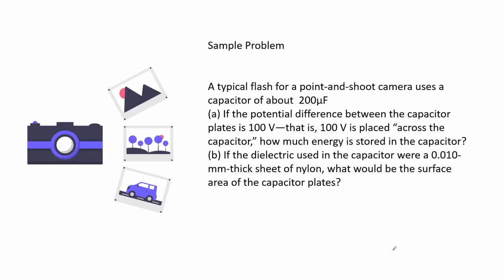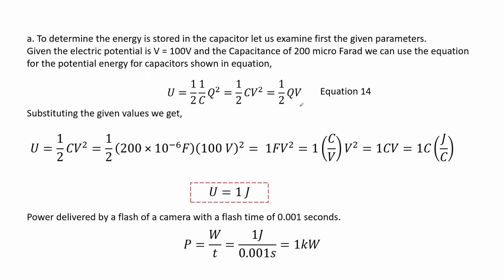Sample problem: A typical flash for a point-and-shoot camera uses a capacitor of about 200 microfarad. For part A, if the potential difference between the capacitor plates is 100 volts, how much energy is stored in the capacitor? Given electric potential of 100 volts and capacitance of 200 microfarad, we use the potential energy equation 14. Substituting the values, we get a potential energy of 1 joule.